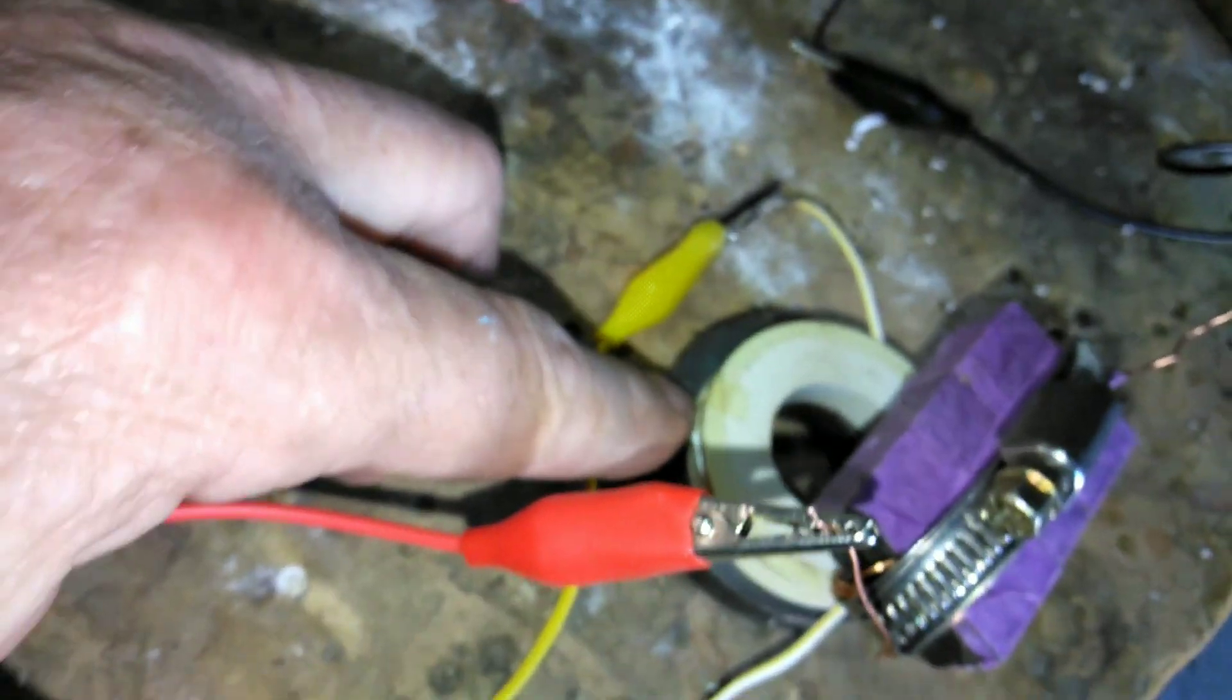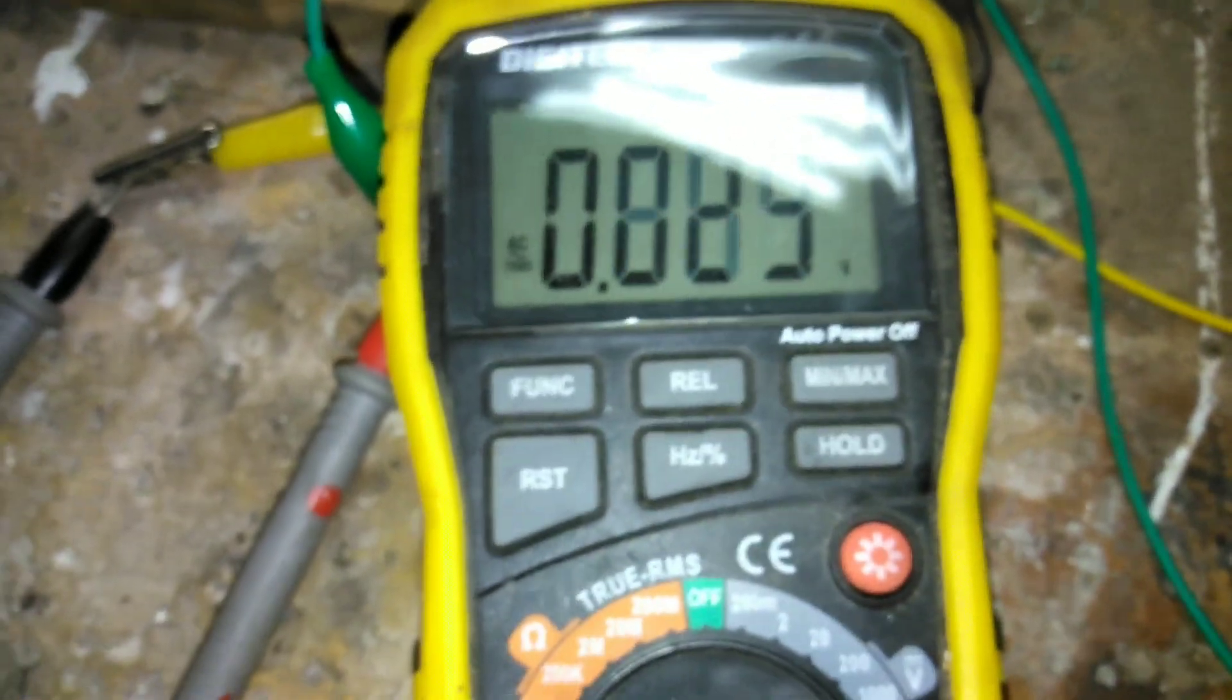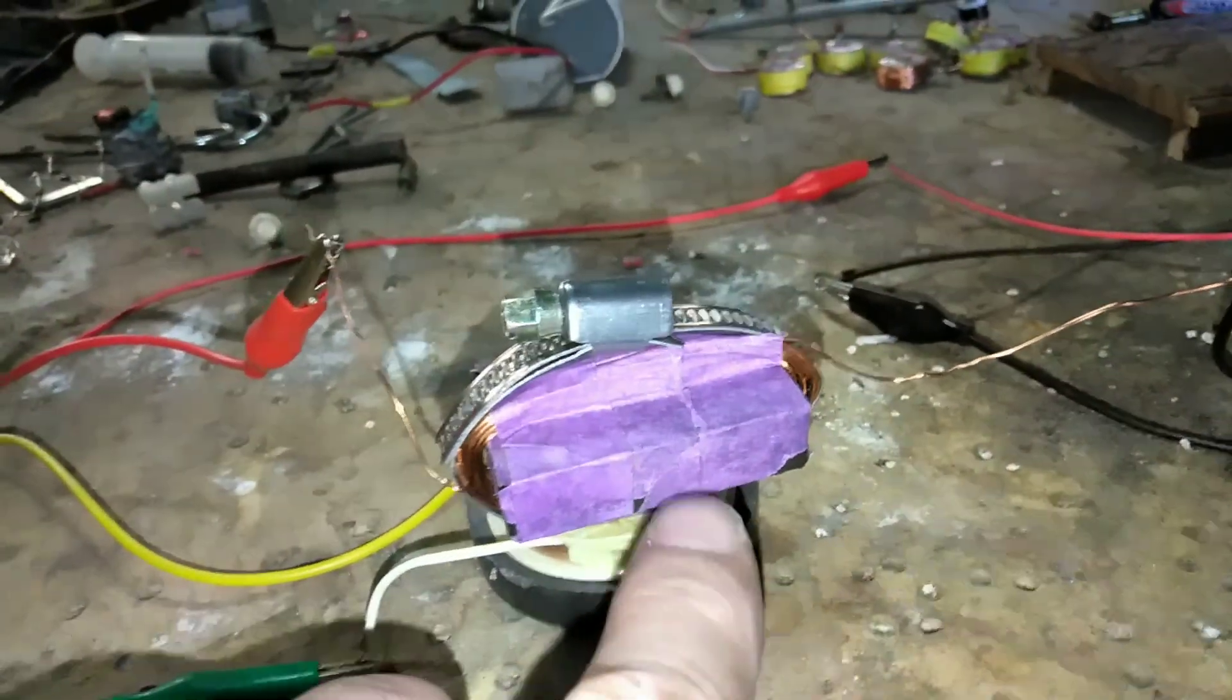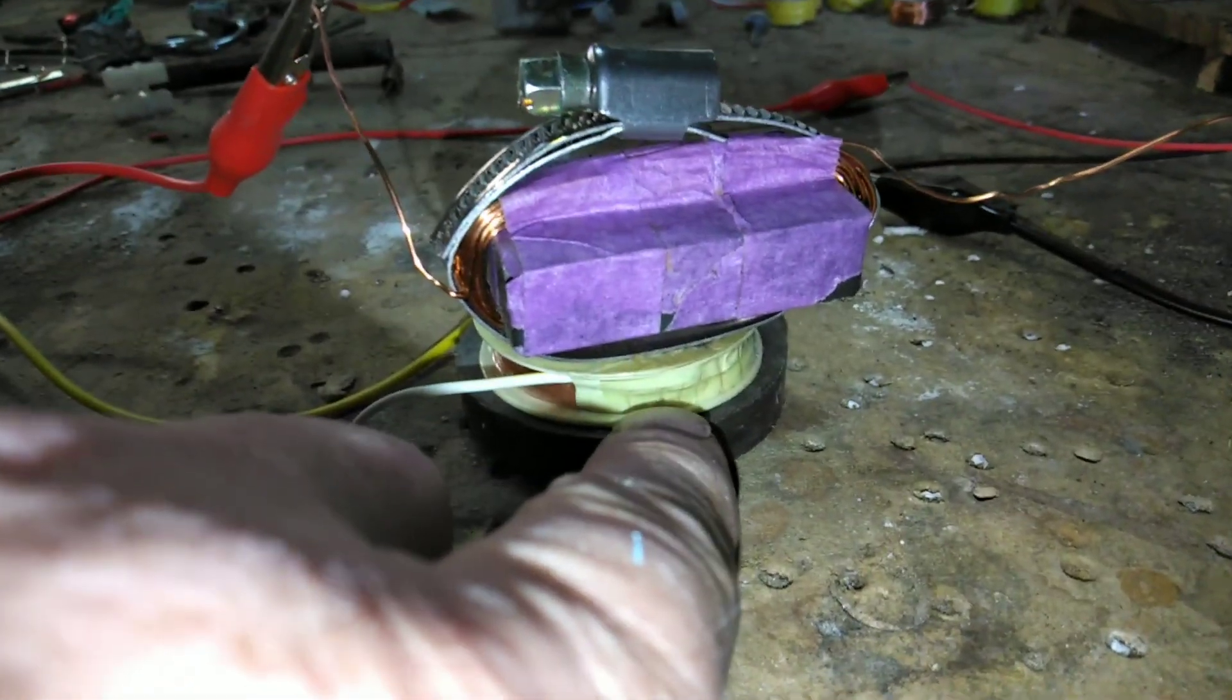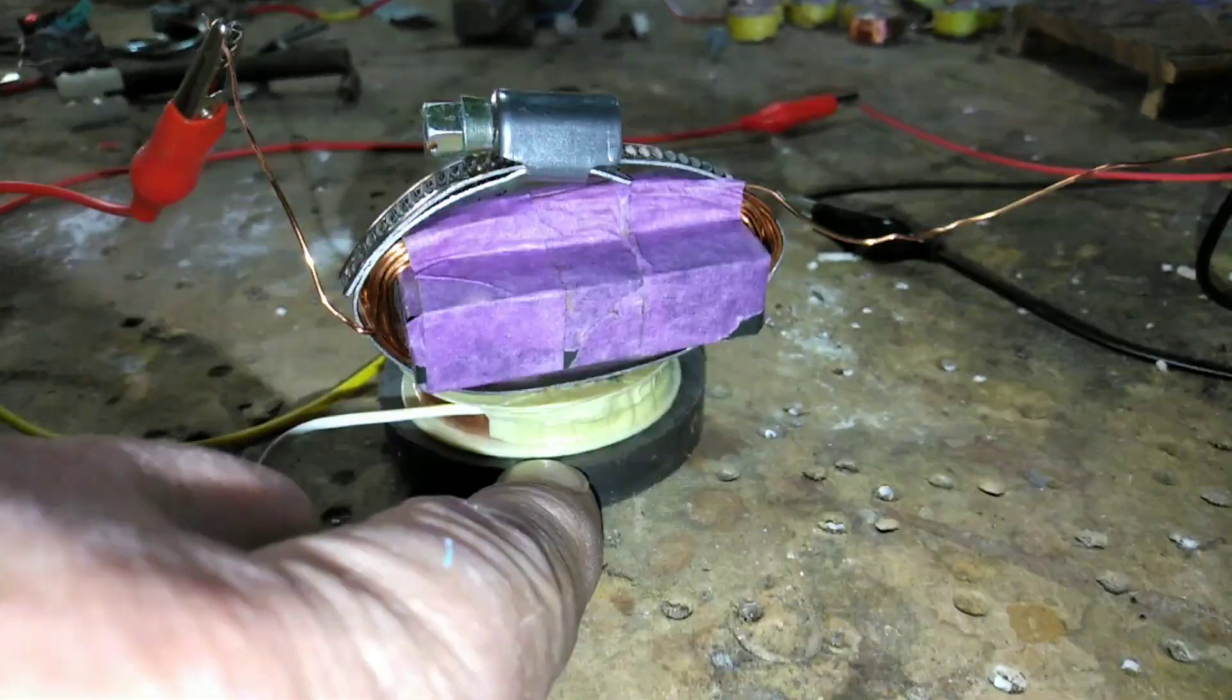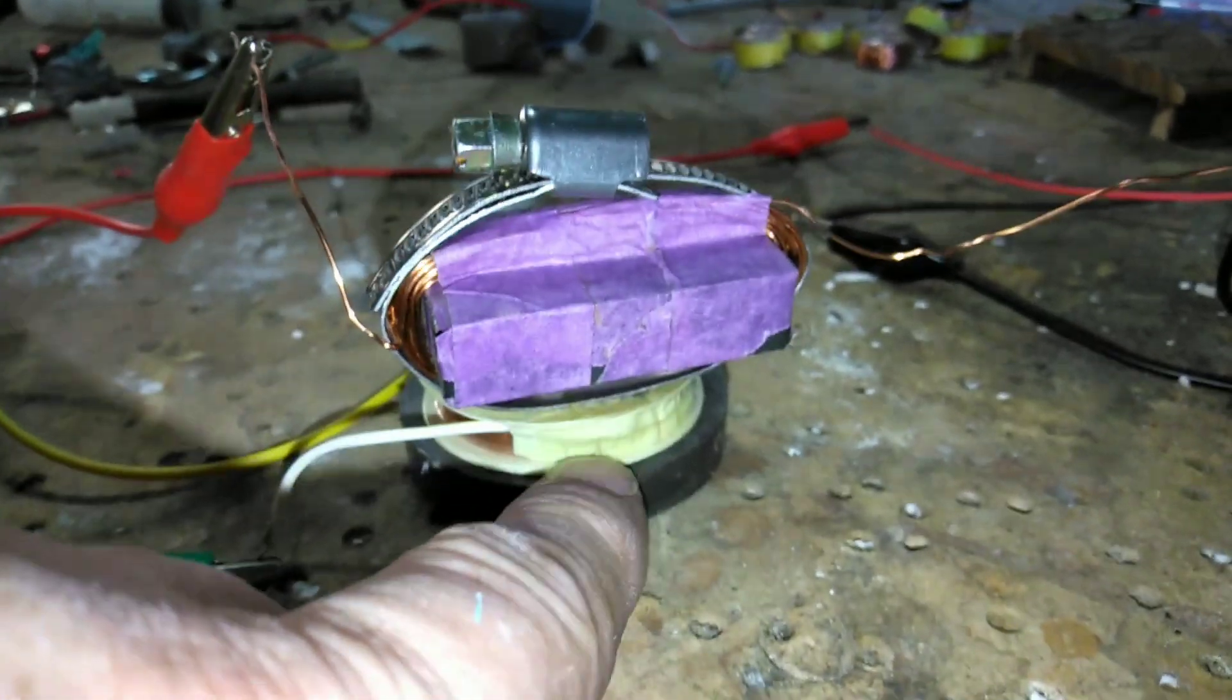So the only thing different is I've changed out the magnet for a ring magnet, as you can see. And it's given us back one volt, so less voltage. And I think the current's a little bit less as well, which tends to indicate that the theory that the magnets play a role in the system is probably proven right there. The stronger neodymium magnet versus the ferrite ring magnet, and so it does confirm the theory.